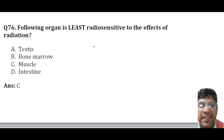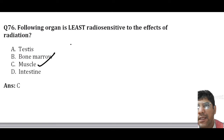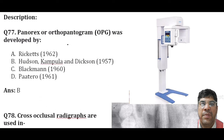The organ least radio-sensitive to the effects of radiation is muscle. The chart for relative radio-sensitivity of various organs is important for entrance examinations. The OPG (panoramic radiograph) was developed by Hudson, Kampula, and Dixon.